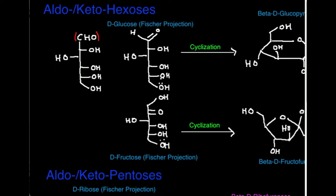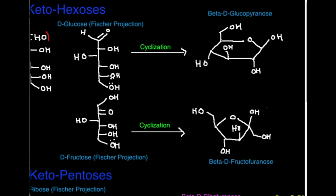Here I have the linear form of D-glucose. Notice it's linear — not how we normally draw it in its cyclic form. This linear form can undergo cyclization, which is non-enzymatic; it happens spontaneously without an enzyme, but it can form a cycle, a six-membered ring. Fructose, here in its linear form, can also undergo a cyclization reaction and form, in this case, a five-membered ring. We will talk about why that happens and how it happens.